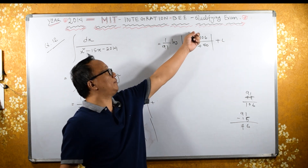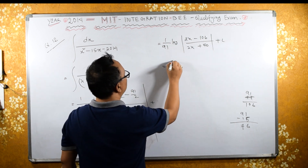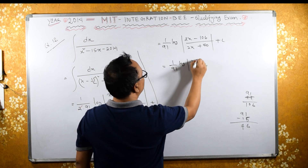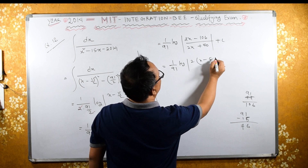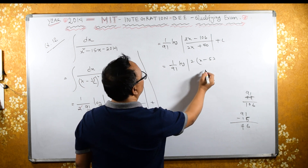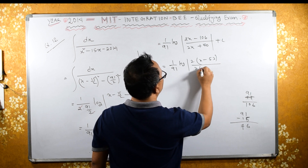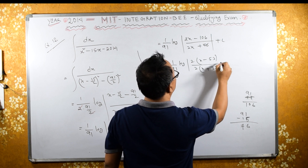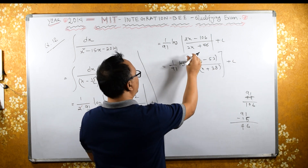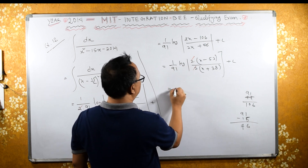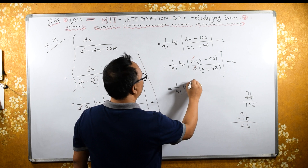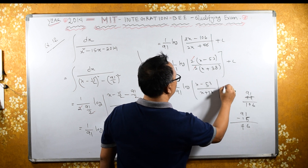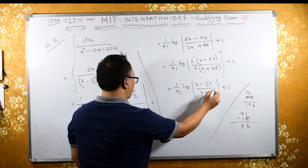Taking 2 common from numerator and denominator: 1 by 91 log of 2 times x minus 53 upon 2 times x plus 38. The 2 from numerator and denominator cancel. What I have is 1 by 91 log of x minus 53 upon x plus 38, plus some constant c. This is the required answer.